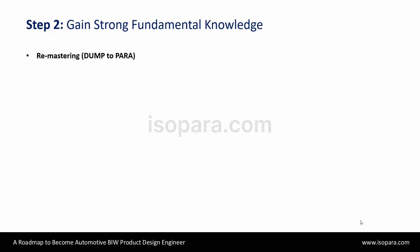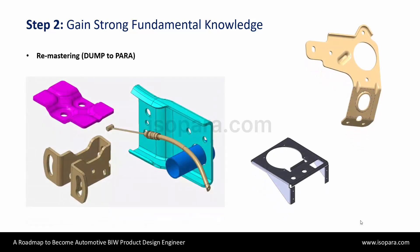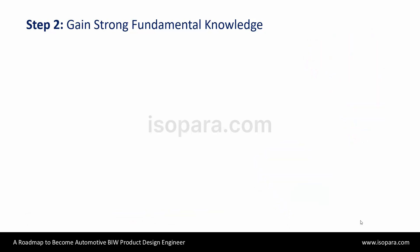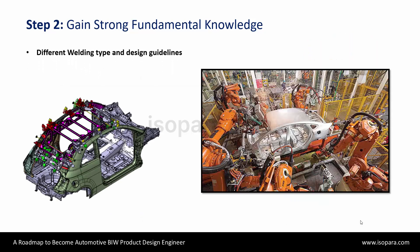Here, you will understand welding types like spot welding, laser welding, core to welding, etc., and how this welding is done with BIW parts — how we are locating the points and lines for the welding, and what are the design guidelines for the weld to follow to provide access to the spot weld gun.